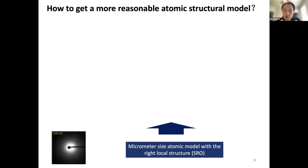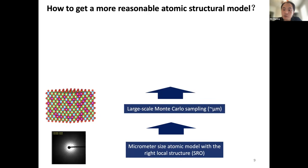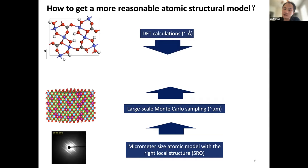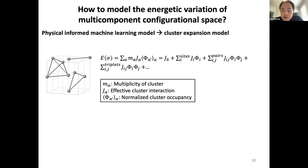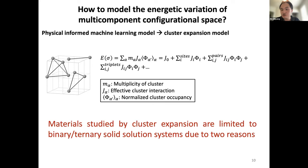If you take a step back: in experiments doing electron diffraction, we have a micrometer-size probe covering a large ensemble of atomic structures, while DFT calculations are limited to the angstrom scale or a few nanometers. Ideally we need billions of atoms at micrometer size. The physical model we use is called cluster expansion — a mean field approximation of the disordered lattice as a linear summation of different clusters. It's essentially a linear model but can have thousands to 10,000 features for a complex system.